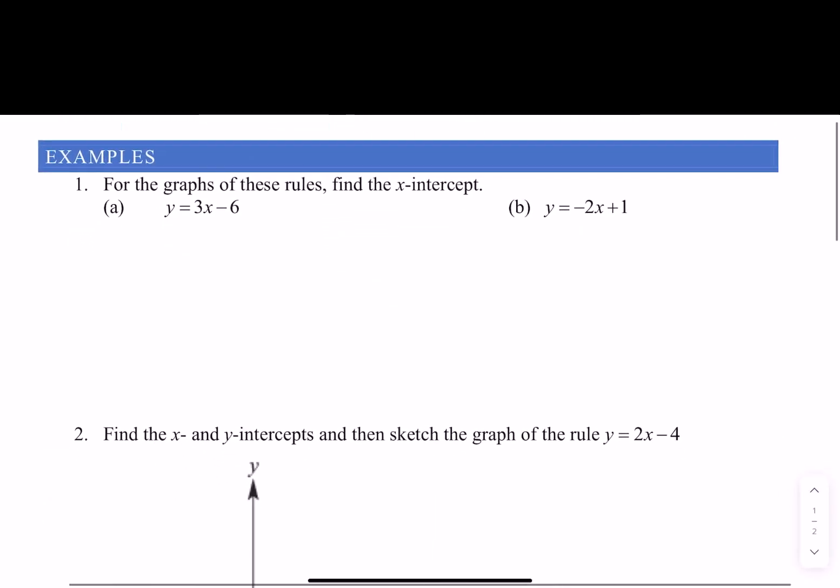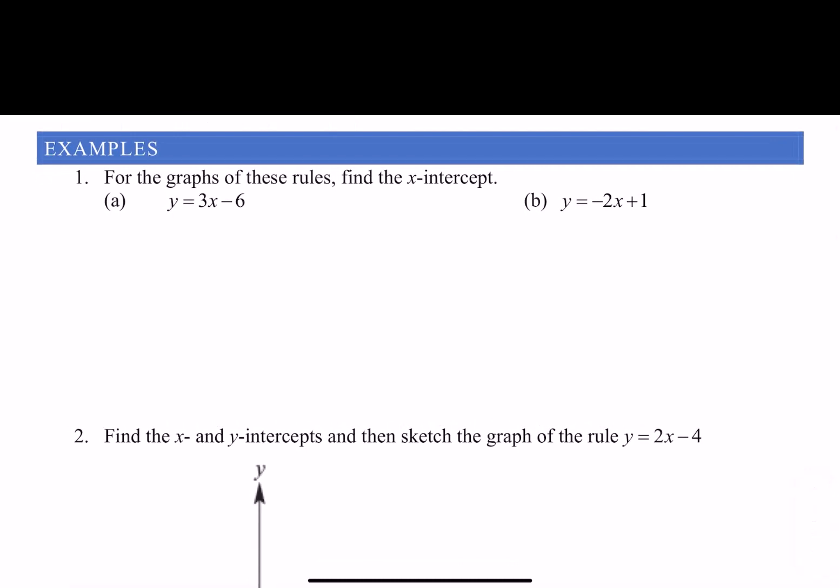So let's have a look at how we can use this for these graphs of rules. Find the x-intercept. Well, the x-intercept occurs when y = 0, so I'm replacing y with 0: 0 = 3x - 6. I'm going to add 6 to both sides and I end up with 6 = 3x. I divide both sides by 3 and I end up with x = 2. So the y-intercept of that straight line is x = 2.